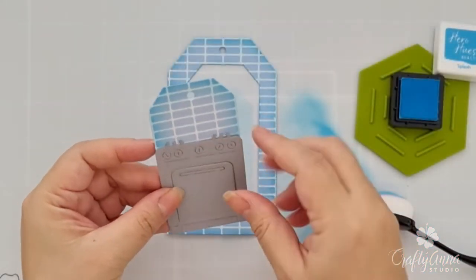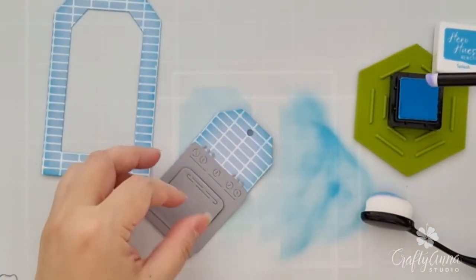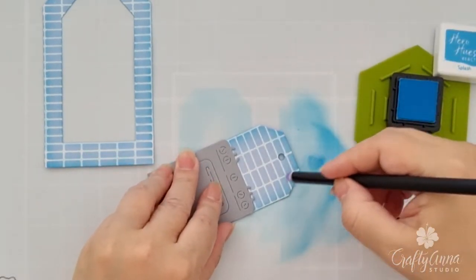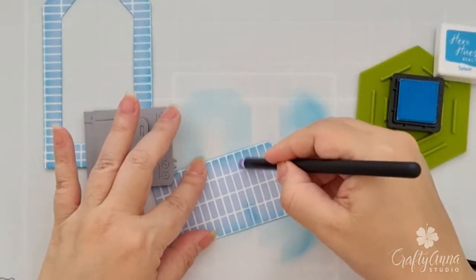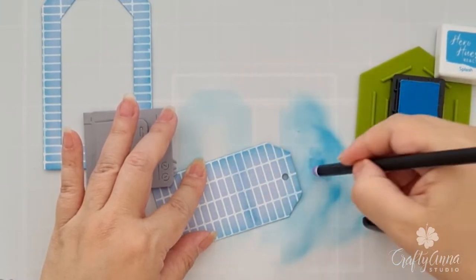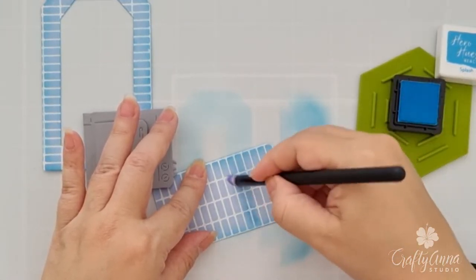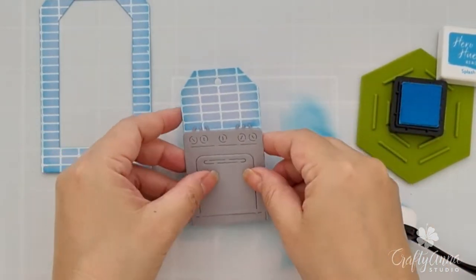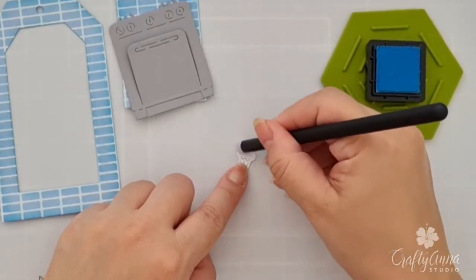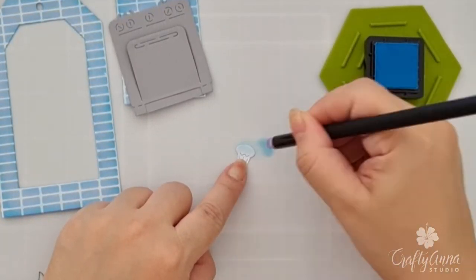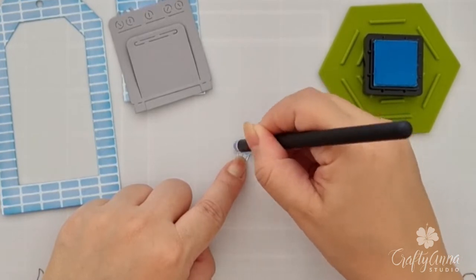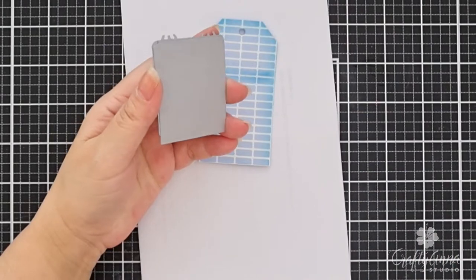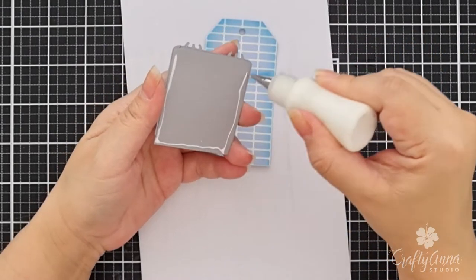I will also add ink blended detail under the area of the top of the oven using a small blending brush. I will also use this to ink blend the cupcake. Then I will adhere the die cut oven at the bottom of the smaller tag.